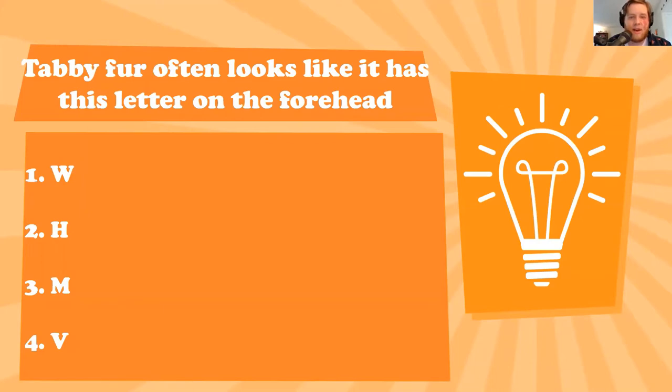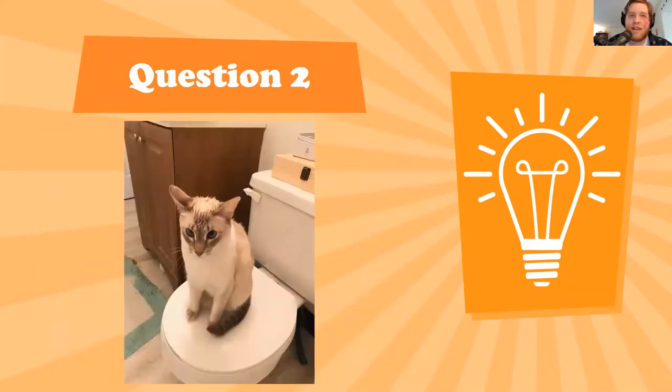All right. We're going to end our polling there. A lot of you guys went with W, which is very fair. It does often look like W. However, the letter often said to be on the forehead of cats is the letter M, which is best exemplified by our friend here. This poor cat, unfortunately, wandered into a shower and decided to sit on the toilet and loudly complain about it until it felt that its complaints were heard. But on their forehead, you can see that sort of classic little M right above the eyes. This is called the mackerel tabby pattern. However, oftentimes, you'd probably see a W or an H, but tabby patterns are often described as having an M on the forehead of the cat.